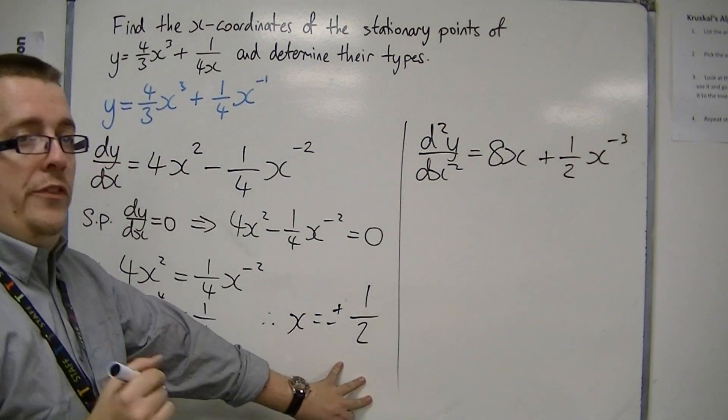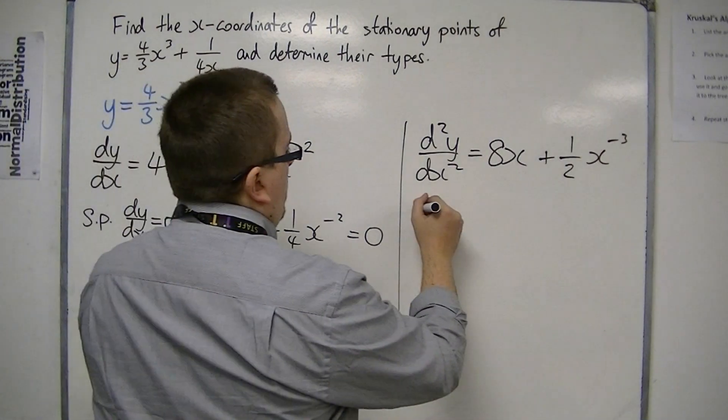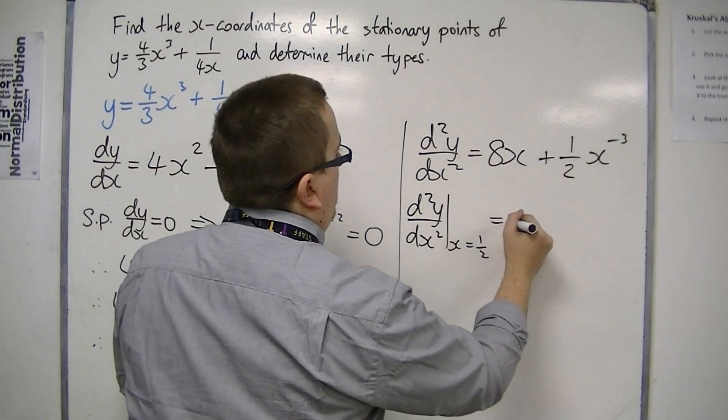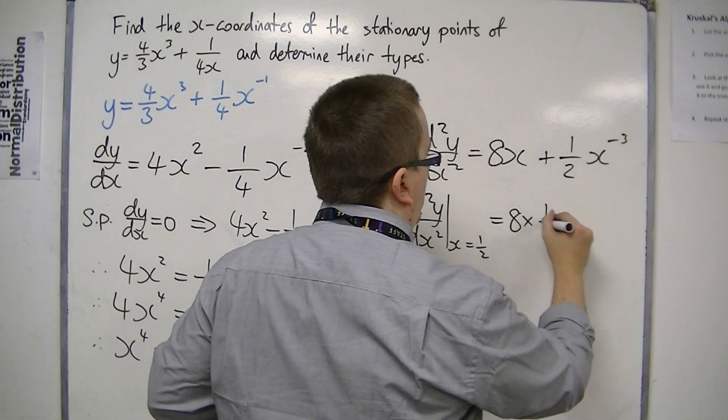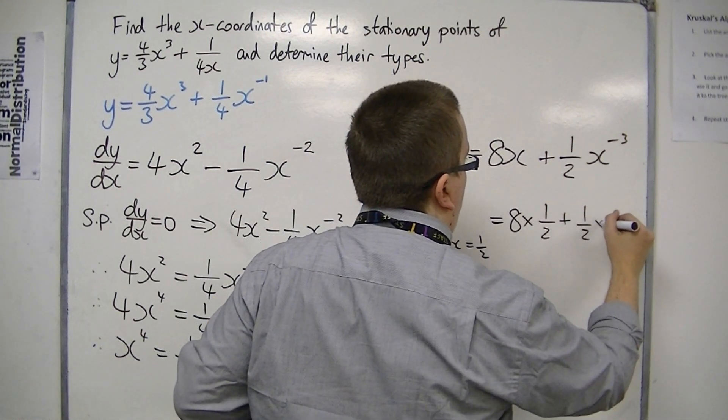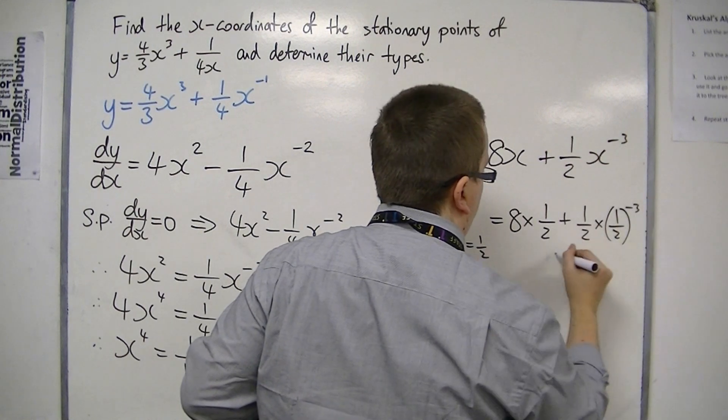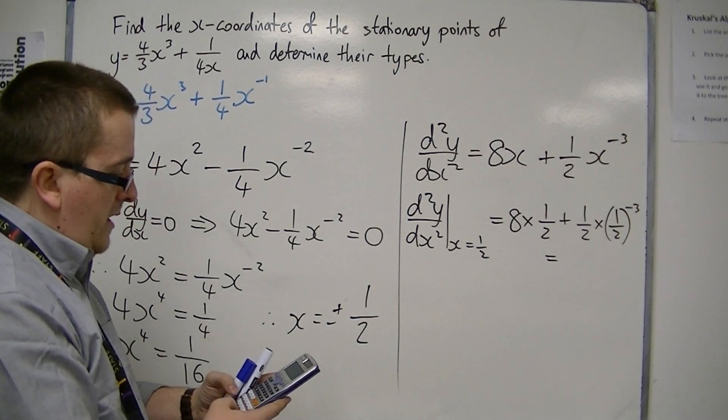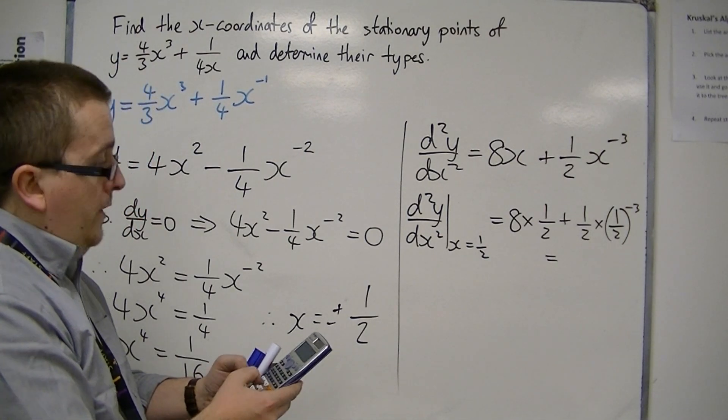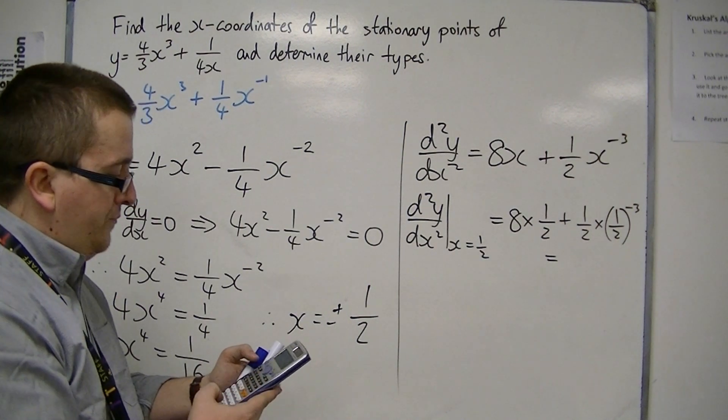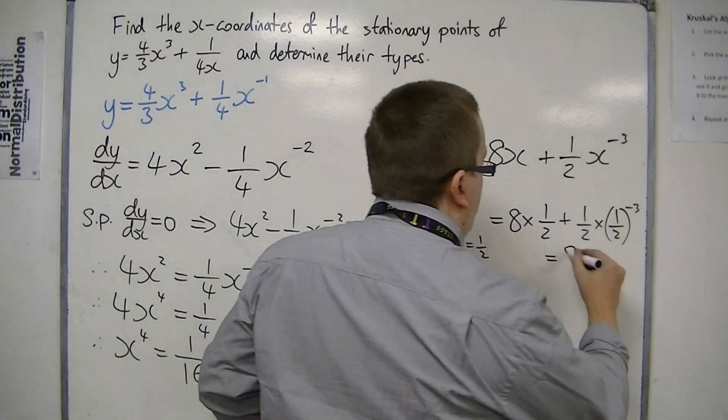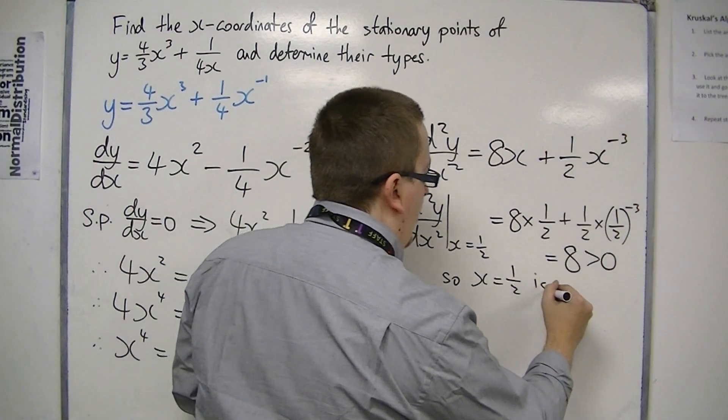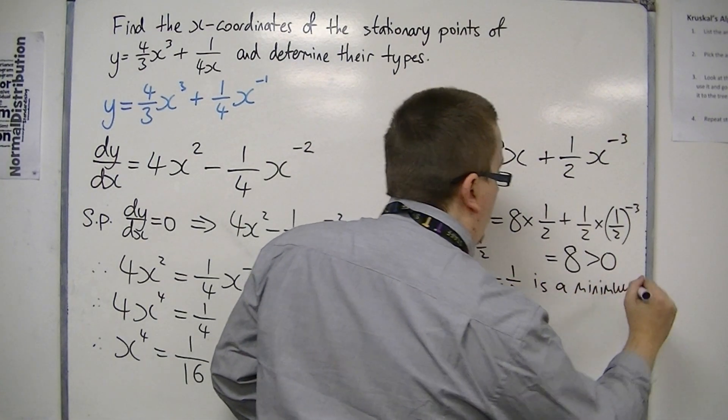Now I need to find out what type of stationary point I have. So I'm going to first of all substitute in x equals 1/2. So I've got 8 times 1/2, plus 1/2 times (1/2)⁻³. So I've plugged that in, 8 times 1/2 plus 1/2 times (1/2)⁻³, which is 8. Now 8 is positive, so x equals 1/2 is a minimum, as the second derivative is positive.